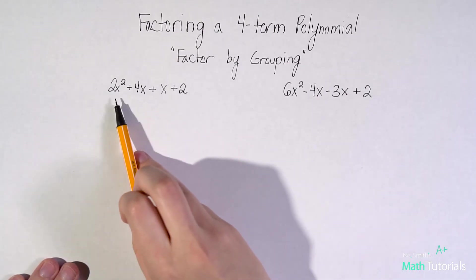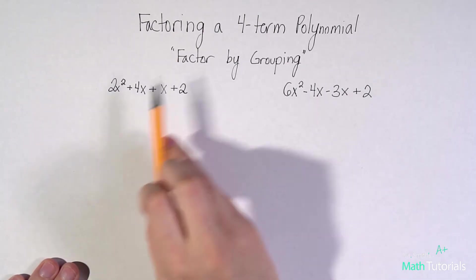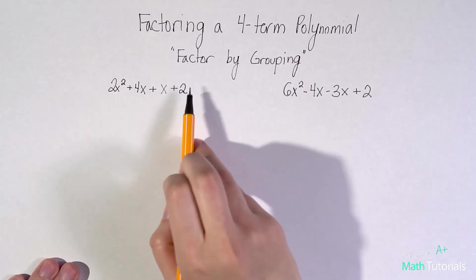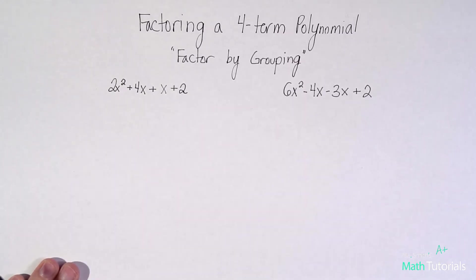Looking at my first example, I noticed I do have a four-term polynomial. One, two, three, four. So I'm going to factor by grouping.